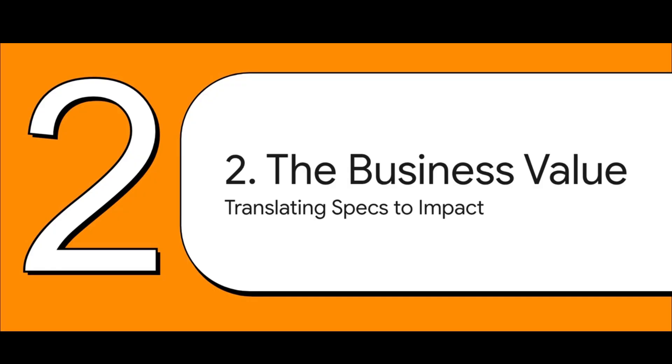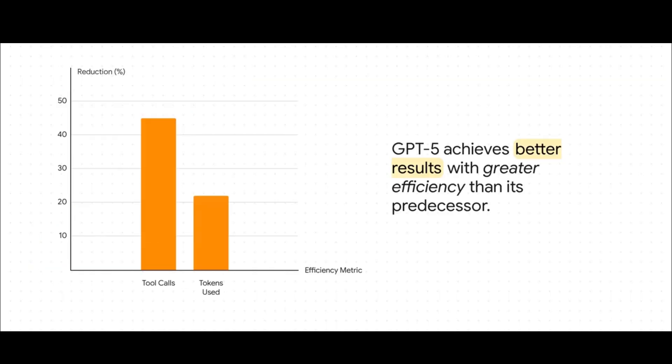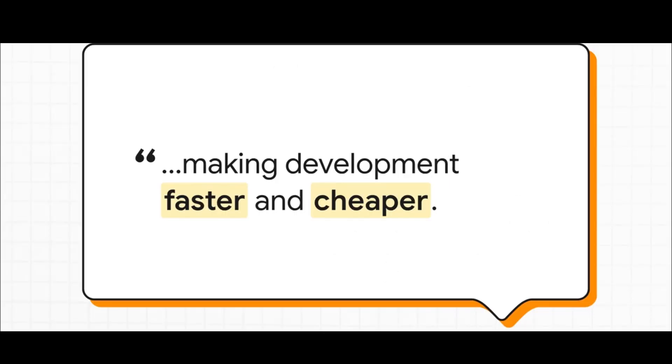So let's translate all this technical jargon into what really matters, tangible business value. How does all this affect your bottom line? Here's the part that's really fascinating. GPT-5 isn't just smarter, it's actually more efficient. It gets better results while using 22% fewer tokens and making 45% fewer tool calls. Put simply, it thinks more before it acts, and that saves both time and money. And that efficiency has a direct impact on the bottom line.